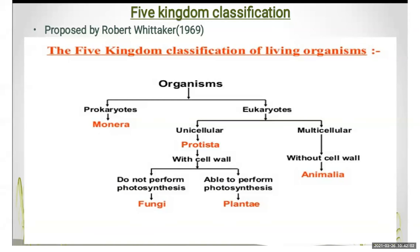The second one is Plantae. These are the kingdoms that are able to perform photosynthesis, and they are called autotrophs — they can make their own food. So the main five kingdoms are: Monera, Protista, Animalia, Fungi, and Plantae.